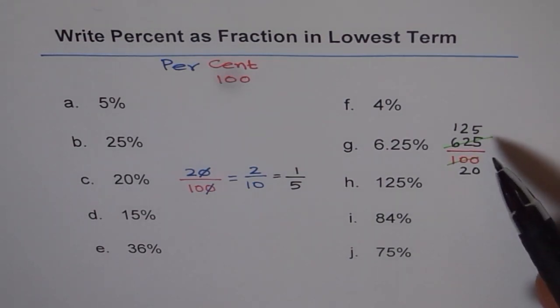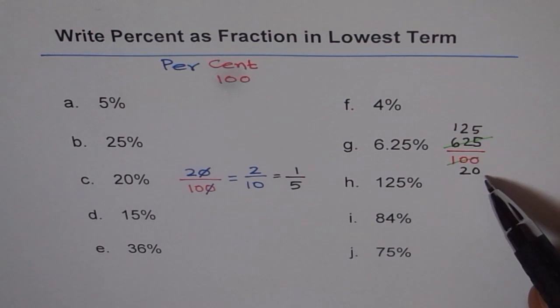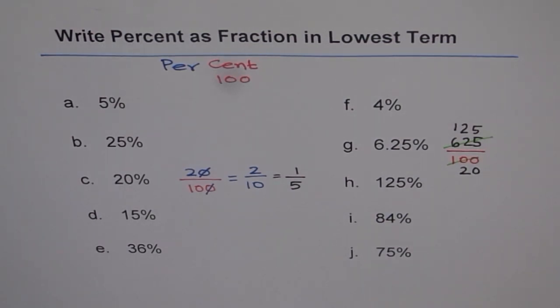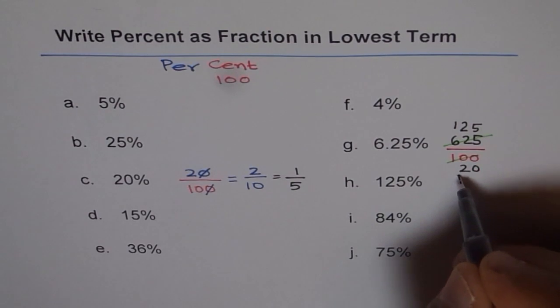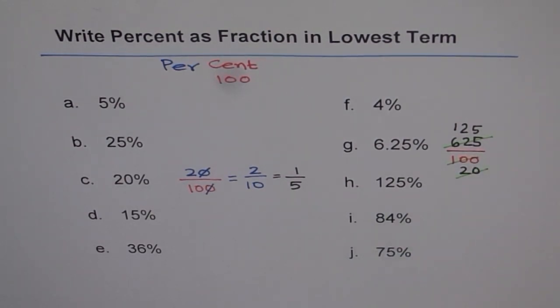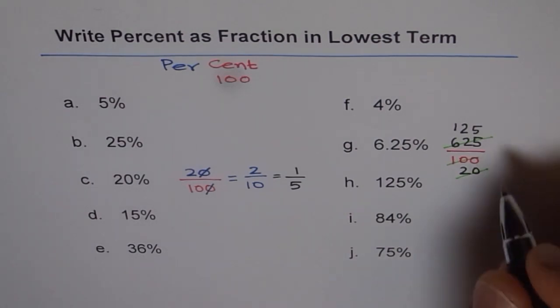Now both numbers are ending by 5 and 0, so they can be divided by 5. So let us divide it by 5. When you divide it by 5, then 20 divided by 5 is 4.